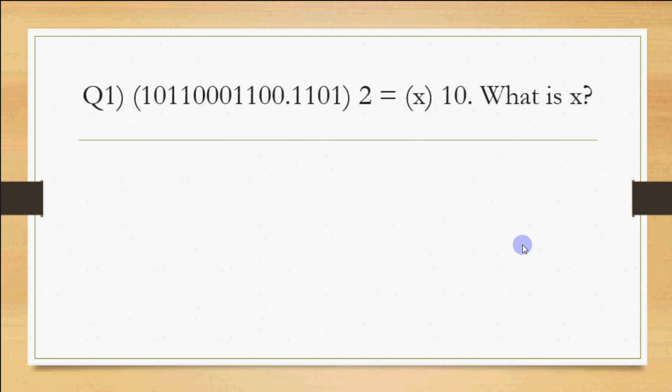Question 1 says: a number is given in binary and you have to tell the decimal equivalent. The binary number is written with subscript 2, meaning it's a binary number, and x with subscript 10 means you have to find the decimal equivalent. Options are given, and you will solve this as explained in the previous video.